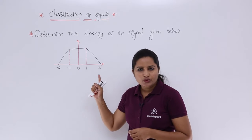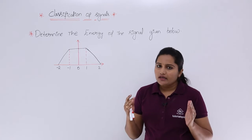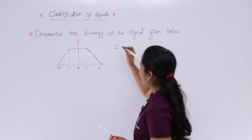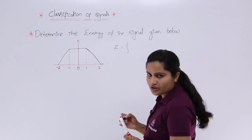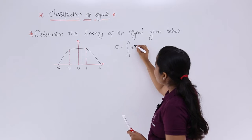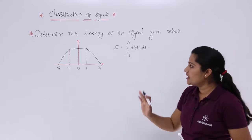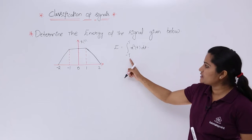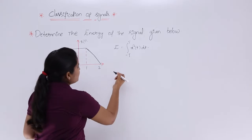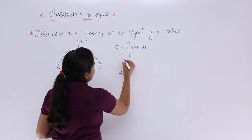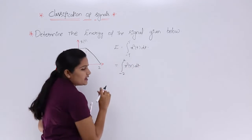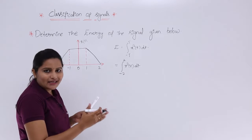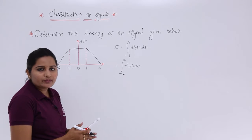Now see the signal — this signal is from minus 2 to 2 only. That means they have given the signal in finite duration to find out the energy. That is why I am going to consider the finite duration energy equation to find out the energy of this particular signal. The finite duration energy is integral from minus T to T of x squared of t dt. Here we know that the limits are from minus 2 to 2, so it becomes integral minus 2 to 2 of x squared of t dt. If you define this total signal at a time it will provide a more complex process, but if you segregate it into different parts you will get a very simple solution.